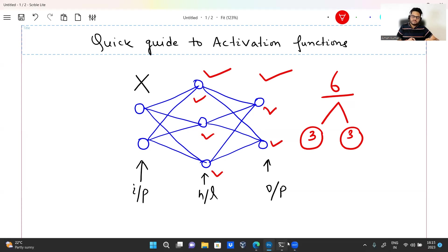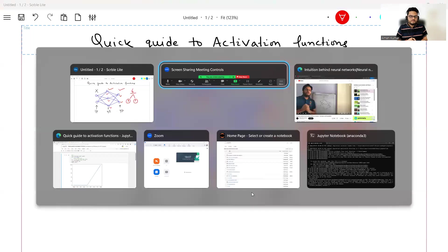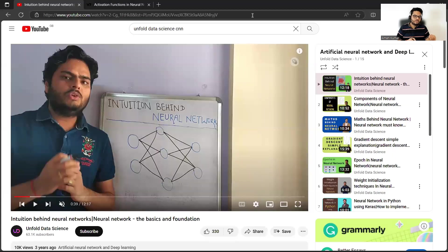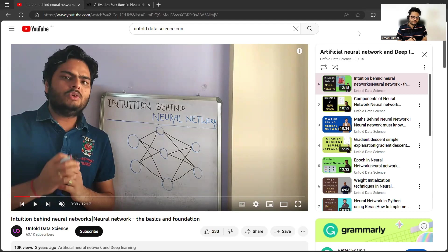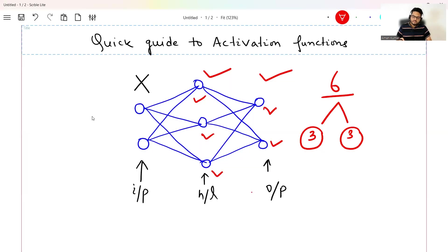If you have confusion about what is a hidden layer, output layer, or neural network, that's not the scope of this video. I'm going to show you the playlist Unfold Data Science — search it on YouTube and you'll find an artificial neural network and deep learning playlist with 15 videos covering all the basics of ANN and deep learning.